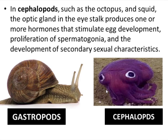The next group are the cephalopods, also molluscs, such as octopus and squid. In cephalopods there is an optic gland present in the eye stalk. This optic gland produces a hormone that stimulates egg development, proliferation of spermatogonia, and development of secondary sexual characters.